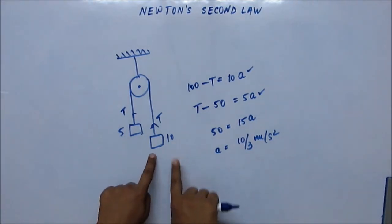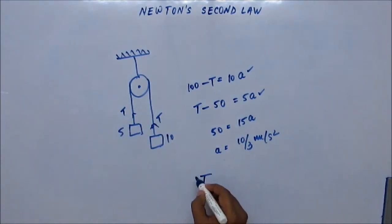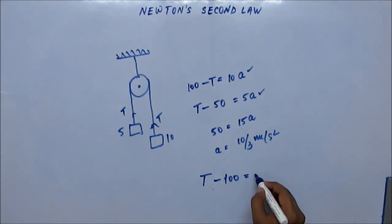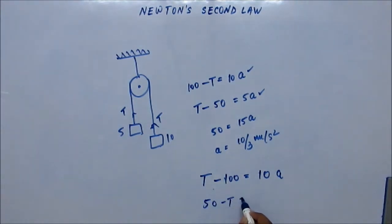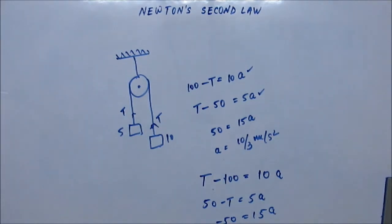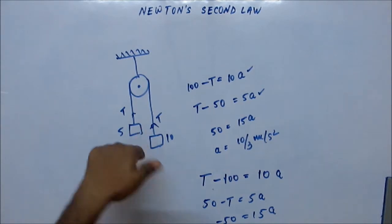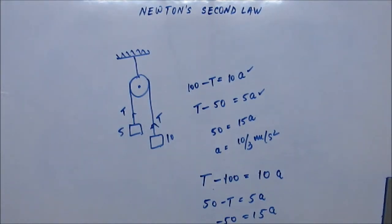Now the other way round: assume 10 kg is going upward. Tension T is always away from the body, so T is upward and mg = 100 N is downward. For the 5 kg block, mg minus T equals 5a. Adding the equations gives minus 50 = 15a, so a = minus 10/3 m/s². The negative sign means acceleration is opposite to the assumed direction — so it is actually downward. If acceleration comes out negative, it simply means it is opposite to the assumed direction.